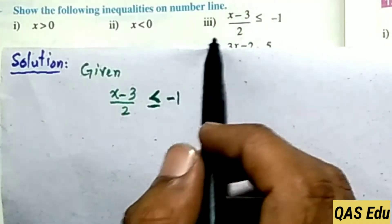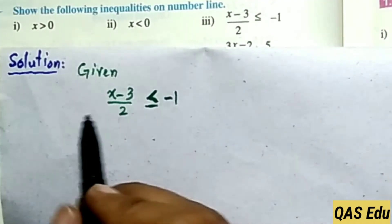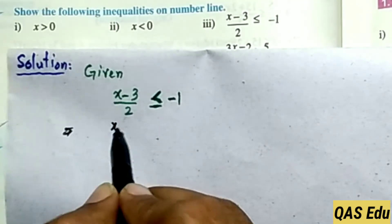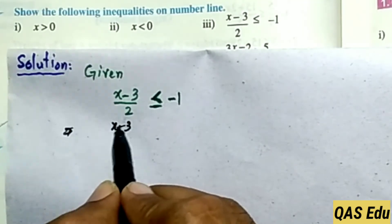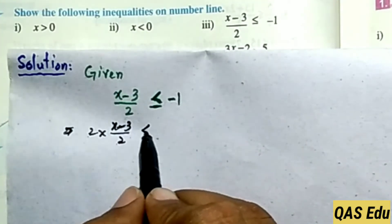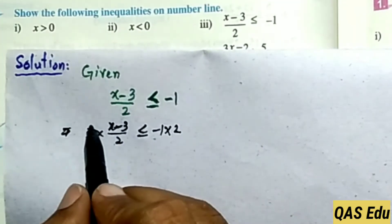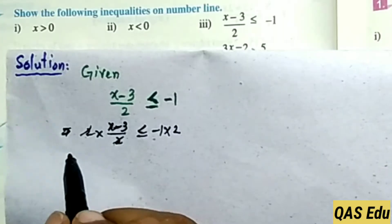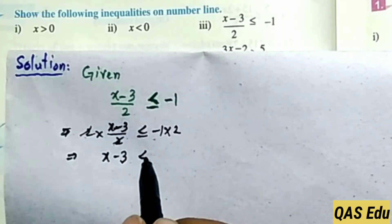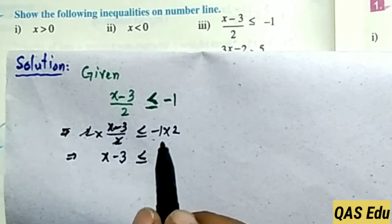Part 5 has a linear inequality to solve. First, multiply both sides by 2 to eliminate the fraction. After multiplying both sides, the 2s cancel. We get x minus 3, and after cancellation the equation balances. Then we get minus 2.